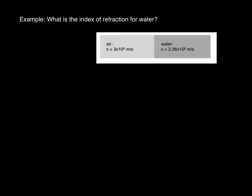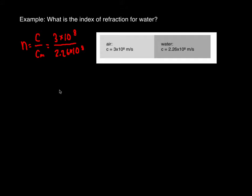For example, if we're looking for the index of refraction in water, we use N equals C over Cm, where C is the regular speed of light, 3 times 10 to the 8, divided by the speed of light in the medium — which is water — 2.26 times 10 to the 8 meters per second. This gives an N value for water equal to 1.33.